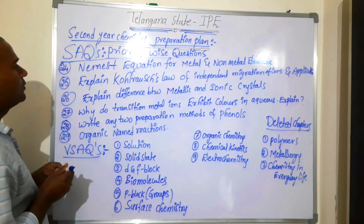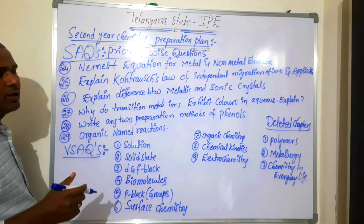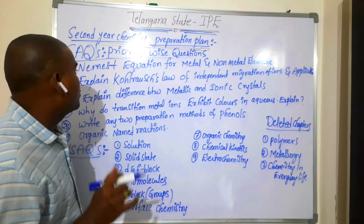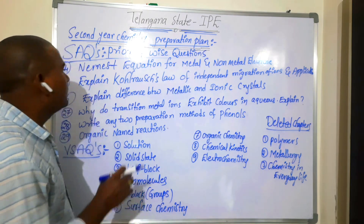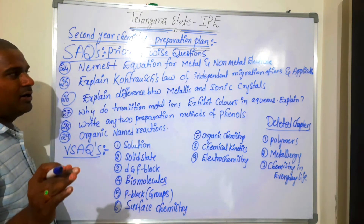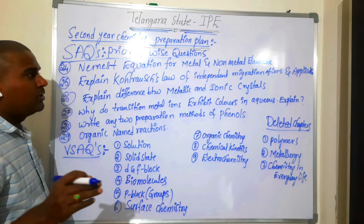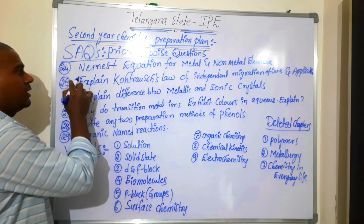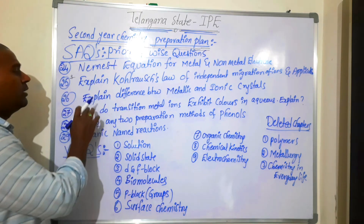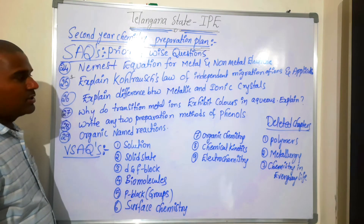Next, twenty-fourth question: Nernst equation for metal and non-metal from electrochemistry — most important one. And explain Kohlrausch's law of independent migration of ions and its applications — also a very important question. Explain differences between metallic and ionic crystals — from solid state.